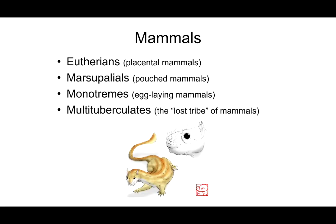Last but not least are the multi-tuberculates — mammals only known from their fossilized remains. Although they are now extinct, the multi-tuberculates were actually the most evolutionarily successful of the mammals to date. They existed from 140 million years ago until just 30 million years ago, so they were around for about 110 million years. Their fossils are found on the continents of Asia and North America, and they ranged in size from that of a tiny mouse to the size of a beaver today.